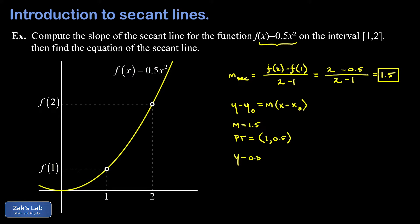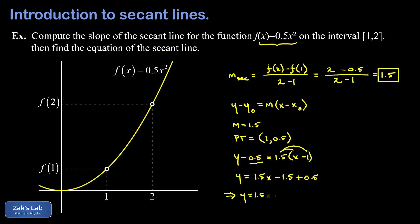Substituting into the point-slope formula gives y minus 0.5 equals 1.5 times (x minus 1). To get slope-intercept form, we solve for y: distributing the 1.5 gives 1.5x minus 1.5, then adding 0.5 to both sides to isolate y. Cleaning up, we get y equals 1.5x minus 1.